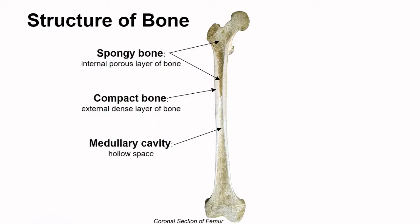When we take a coronal or frontal section of a femur, which is the thigh bone, we can see that there are two different organizations of bone tissue inside. One is more spacious and one is more dense. In all bones, there's a layer of compact bone — the dense layer — surrounding the spongy bone, which is the porous layer. While compact bone is stronger, spongy bone is a different kind of strong. In some bones, the spongy bone will surround a hollow space called the medullary cavity.